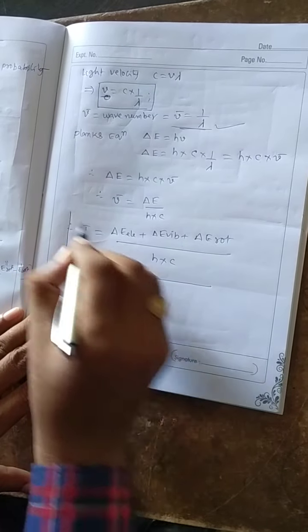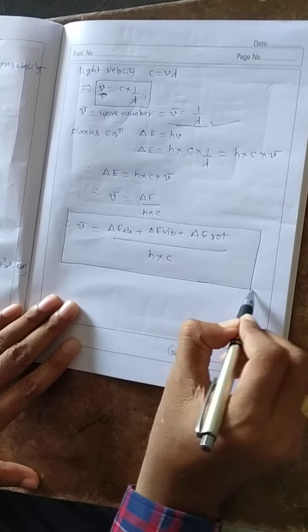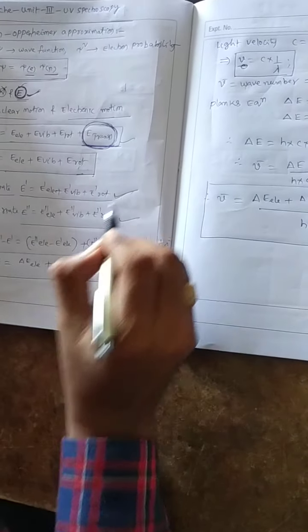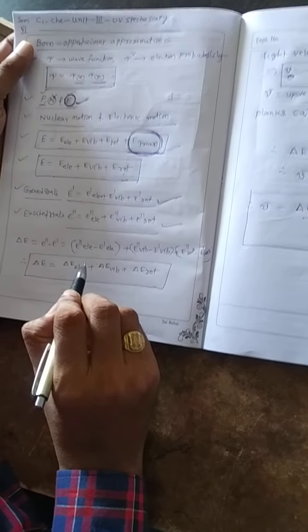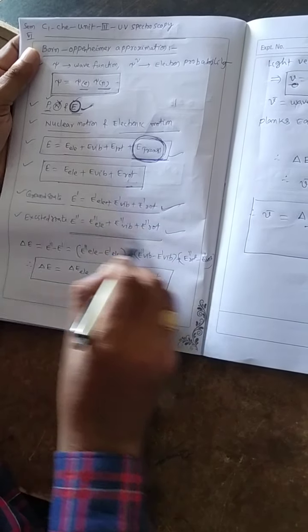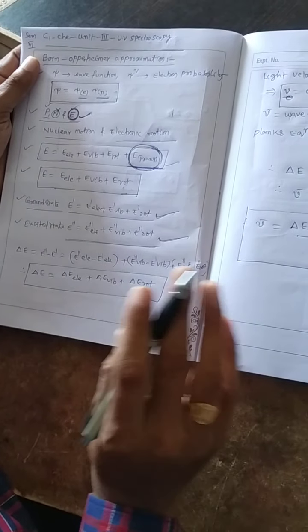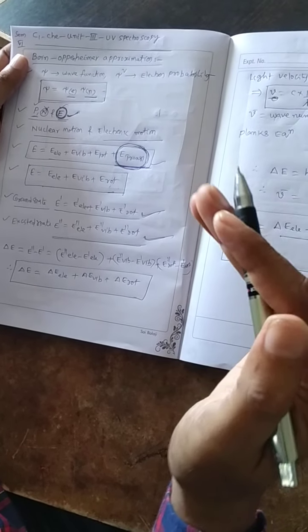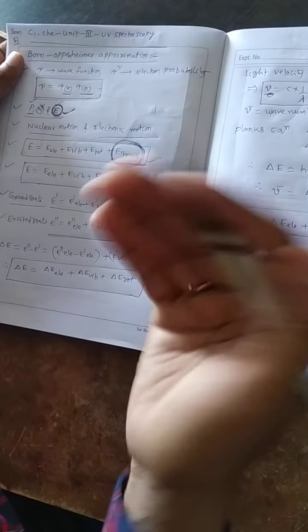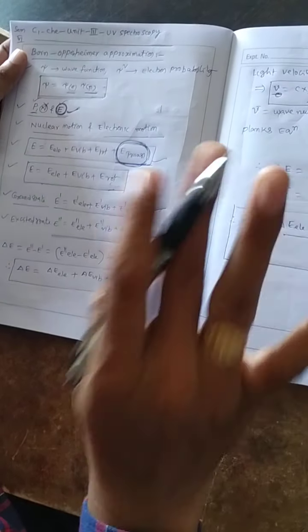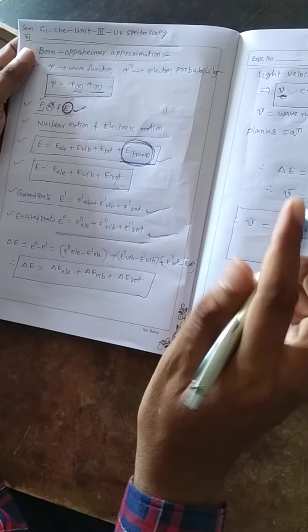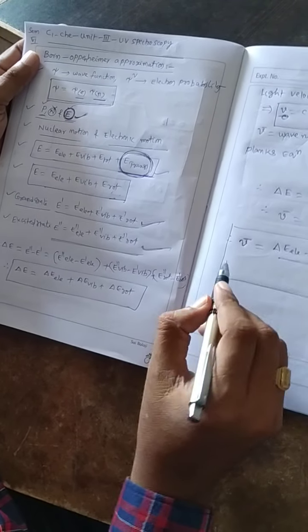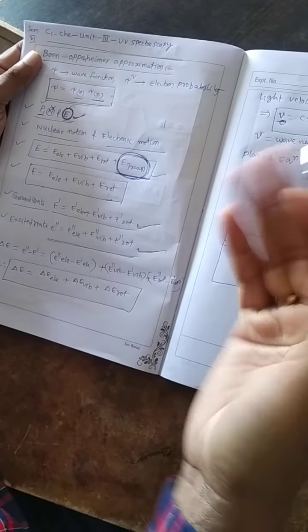When an atom is in ground state and then promoted to excited state, it is in lower energy in ground state and higher energy when promoted. This energy is absorbed. This is the general energy in absorption for UV-visible radiation.